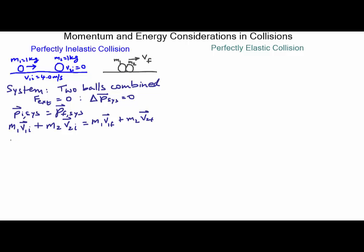Now I can put in my values. M1 is 1 kilogram, V1i is 4.0 meters per second, M2 is 1 kilogram, V2i is 0. On the right side, M1 is 1 kilogram and the final velocity is Vf; M2 is also 1 kilogram and its final velocity is also Vf. So I have one equation with one variable, and when I simplify, I get Vf equals 4.0 divided by 2.0, which is 2.0 meters per second.